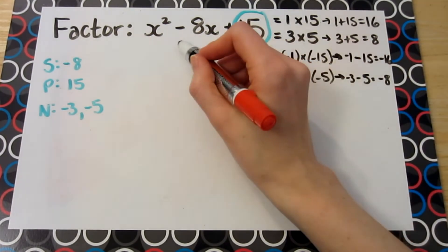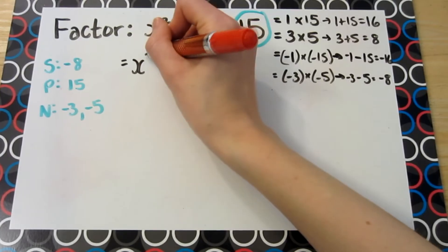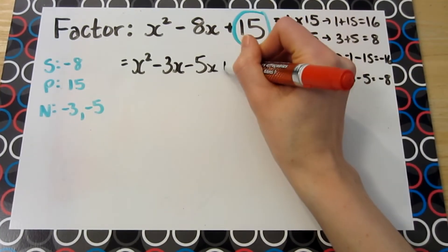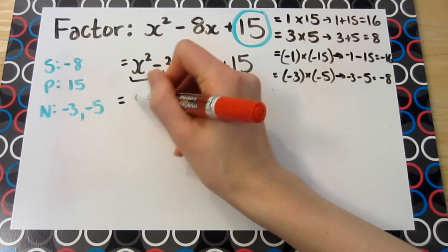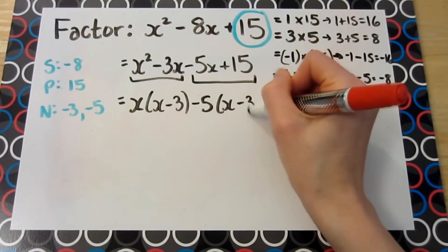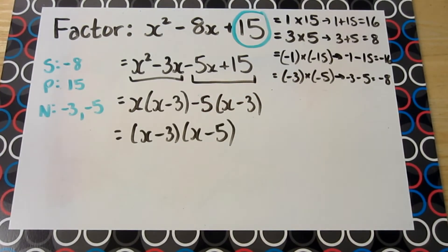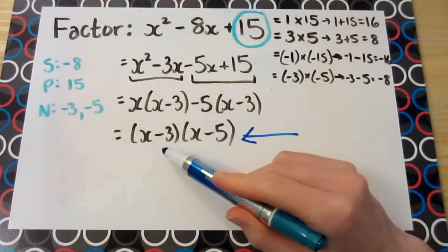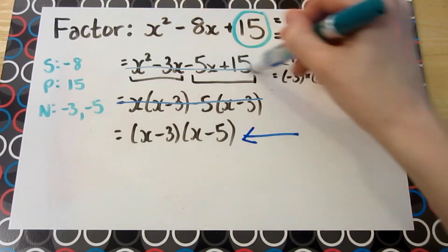The next step is to replace the negative 8x with the two numbers we found: keeping x squared as is, replacing 8x with negative 3x minus 5x, and keeping the product of 15 as is. Next, we factor by grouping. Take the first two terms and factor out a common factor of x. Then for the second two terms, the common factor is negative 5. Finally, common factor out the x minus 3, leaving you with x minus 3 multiplied by x minus 5. Remember, we can go straight to this step — because we know the two numbers are negative 3 and negative 5, all we have to do is keep an x in each parenthesis. And this question is complete.